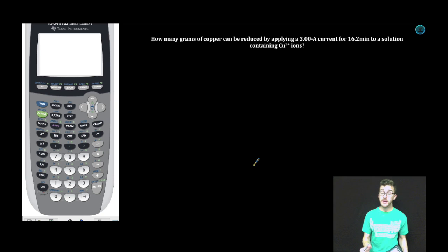So let's take a look at a quick example to help understand how we're going to use stoichiometry in these electrolytic cell type problems. How many grams of copper can be reduced by applying a 3.00 amp current for 16.2 minutes to a solution containing copper two ions? All right, the big equation that you're going to use in problems like this is I equals Q over T.